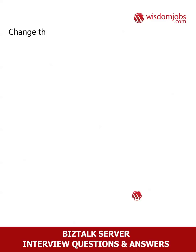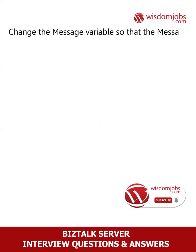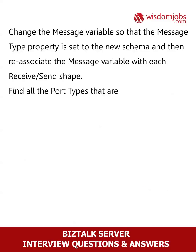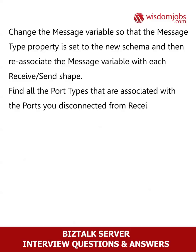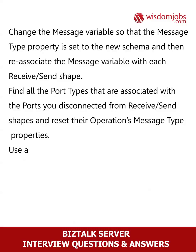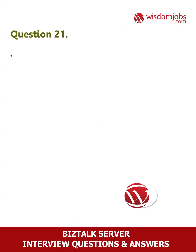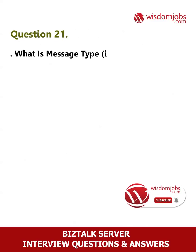Change the message variable so that the message type property is set to the new schema, and then re-associate the message variable with each receive and send shape. Find all the port types that are associated with the ports you disconnected from receive and send shapes, and reset their operations' message type properties. Use a multi-part message type to wrap the underlying schema — it's flexible and saves time in the long run.